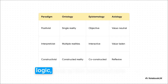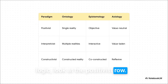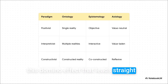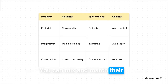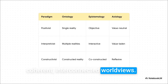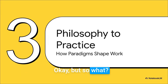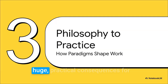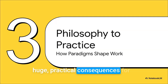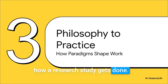Look at the positivist row. A belief in a single reality creates this domino effect that leads straight to a value-free, structured approach. It shows you that these aren't just random ideas you can mix and match — they're coherent, interconnected worldviews. But so what? Why does any of this abstract philosophy stuff actually matter? Well, because these ideas have huge practical consequences for how a research study gets done. This is where the rubber really meets the road.